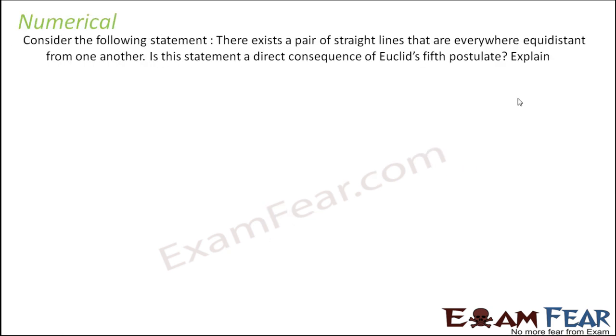Let's take some numerical now. Consider the following statement: There exists a pair of straight lines that are everywhere equidistant from one another. Is this statement a direct consequence of the 5th postulate?